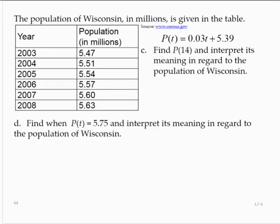Find P(14) and interpret its meaning in regard to the population of Wisconsin. Well, we have the function, so then P(14) would be 0.03 times 14 plus 5.39. Following the order of operations, we'd have 0.03 times 14 and adding 5.39, give me 5.81.